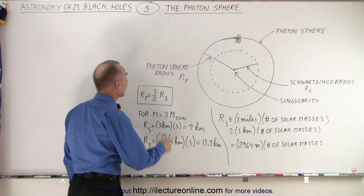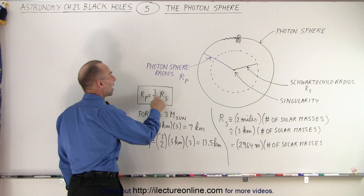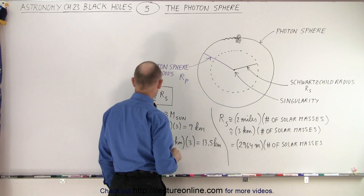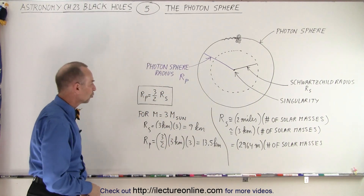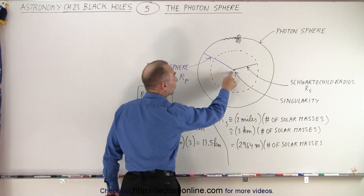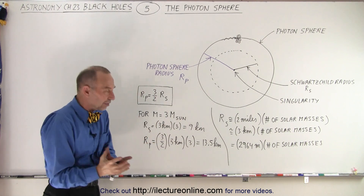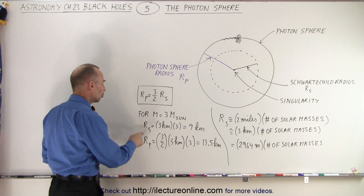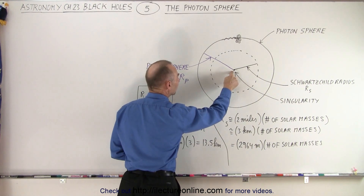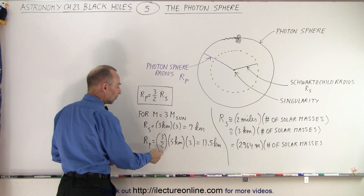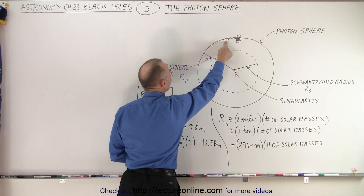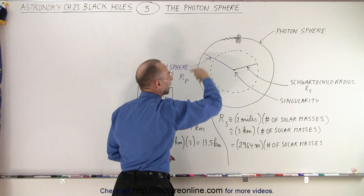That's why they call it the photon sphere, and it turns out it's exactly one and a half times the distance from the singularity to the event horizon — that's called the Schwarzschild radius. For an example, let's say there are three solar masses inside your black hole. The Schwarzschild radius would then be three kilometers times three, or nine kilometers — so it's nine kilometers from the singularity to the event horizon. Multiply that by three halves and you get 13 and a half kilometers, which is the distance to the photon sphere.